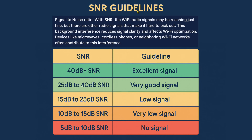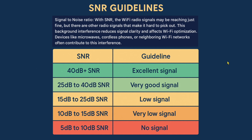This is the last chart, and it has the most value. It's called the SNR guidelines — Signal-to-Noise Ratio. The idea is that Wi-Fi radio signals may be reaching you just fine, but other radio signals make it hard to pick them out. Background interference from devices like microwaves, cordless phones, and other networks reduces signal clarity. This chart combines both values to give you a final rating.